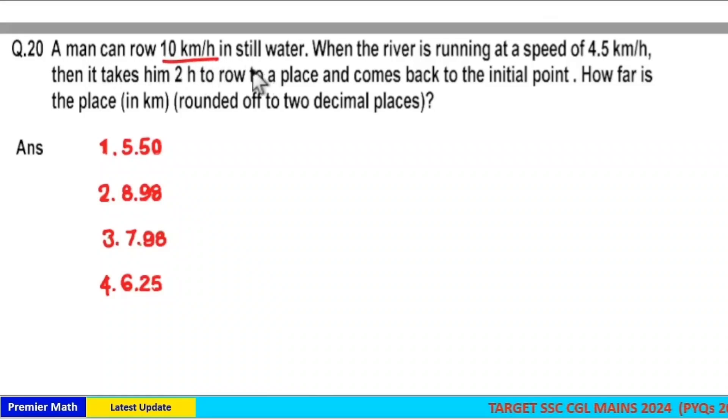A man can row 10 km per hour in still water. When the river is running at a speed of 4.5 km per hour, then it takes him 2 hours to row to a place and come back to the initial point. How far is the place in kilometers?